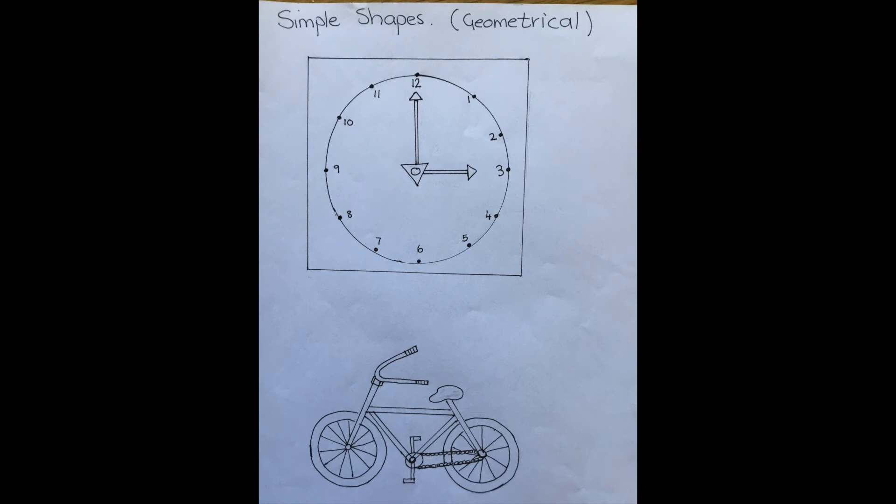If we have a look at our bicycle, we have circles for the wheels and the tires. We have a triangle for part of the frame. We have a semicircle for our handlebars, a triangle for our seat, and our pedals are little rectangles as well.